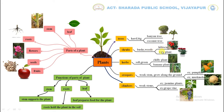Herbs have soft green stems; they live for a few months. For example, chili plant and banana plant. Creepers have weak stems; they grow along the ground. For example, pumpkin plant and muskmelon plant. Climbers have weak stems; they need support to grow. For example, jasmine plant and grape vine.